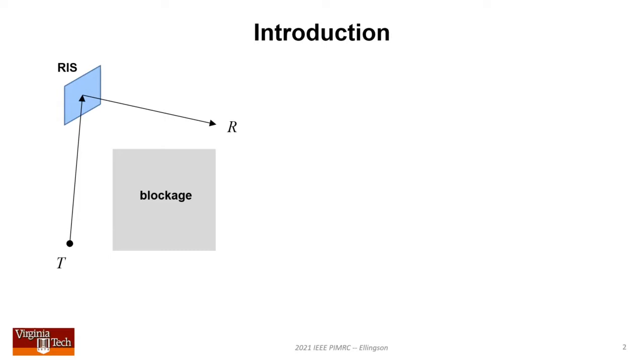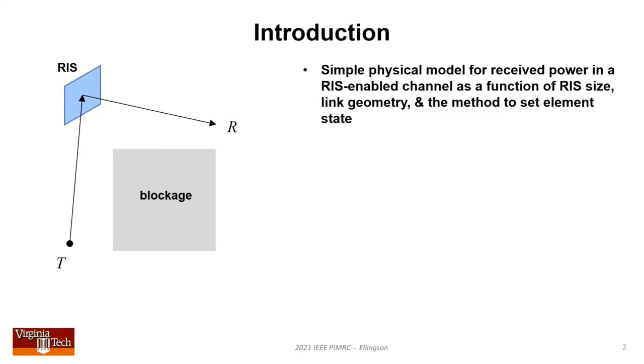However, the analysis required to fully understand this is broadly applicable to things like spatial multiplexing and MIMO. I will present a simple physical model for received power in an RIS-enabled channel as a function of RIS size, link geometry, and the method used to set the element state.